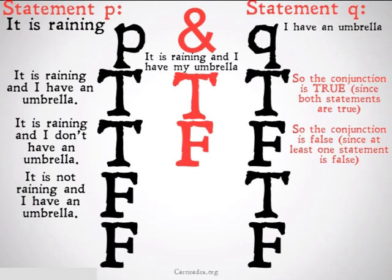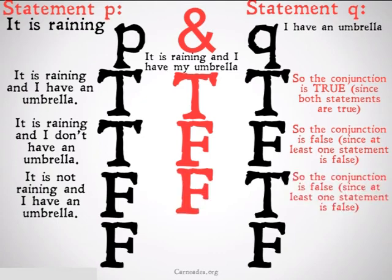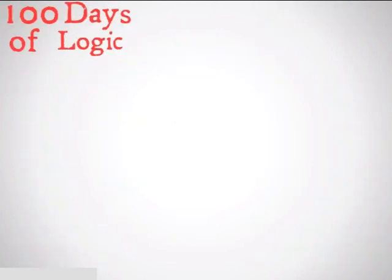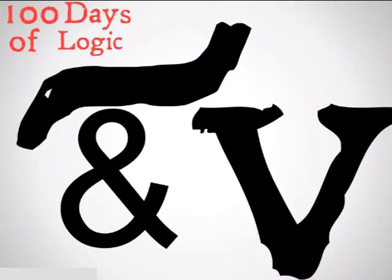It is not raining, but I have an umbrella — the conjunction is once again false because at least one is false. And finally, it's not raining and I don't have an umbrella. The conjunction is still false because both of the statements are false. That was conjunction.